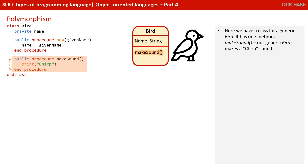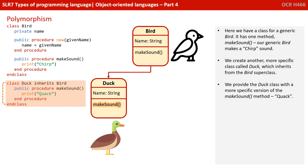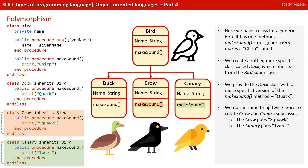Let's have a look at an example with some code. Here we have a class for a generic bird object. It has one method, make sound, and our generic bird makes a chirp sound if we call its make sound method. We create another more specific class called duck, which inherits from the bird class. We provide the duck class with a more specific version of the make sound method: quack. We do the same thing twice more to create crow and canary subclasses — crows go squawk and canaries go tweet.